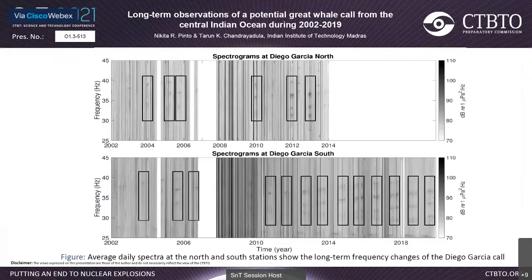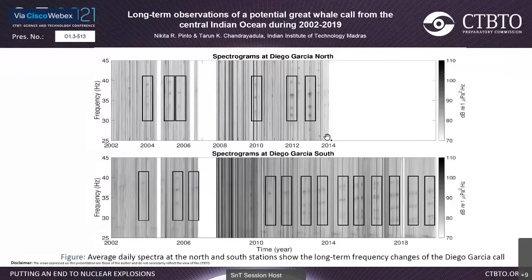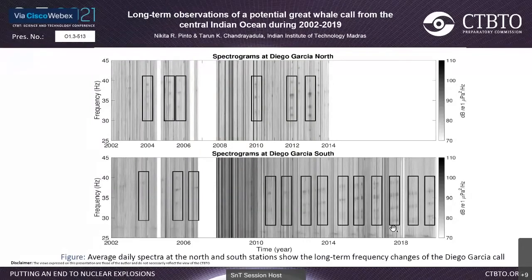The frequencies of the Diego Garcia call change over the 18-year period. These plots are spectral averages from the north and south hydrophones, generated by averaging one-minute spectra for each day over 18 years. Data for the north ended at 2013. The frequencies of the Diego Garcia call seem to both increase and decrease over the 18 years. This peculiar nature of change, along with the presence of interference, makes it challenging to quantify these frequency changes.